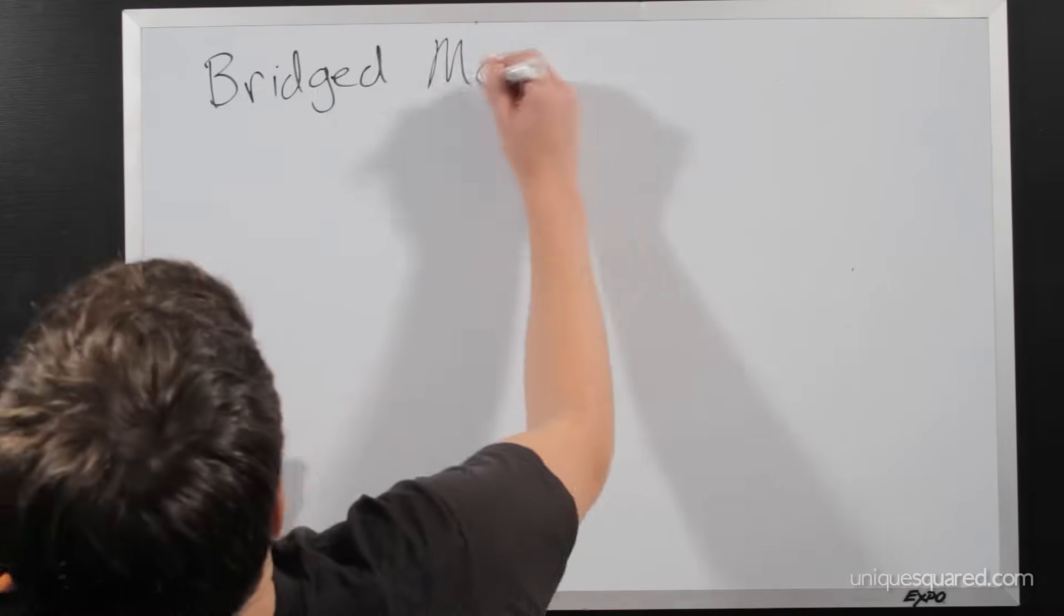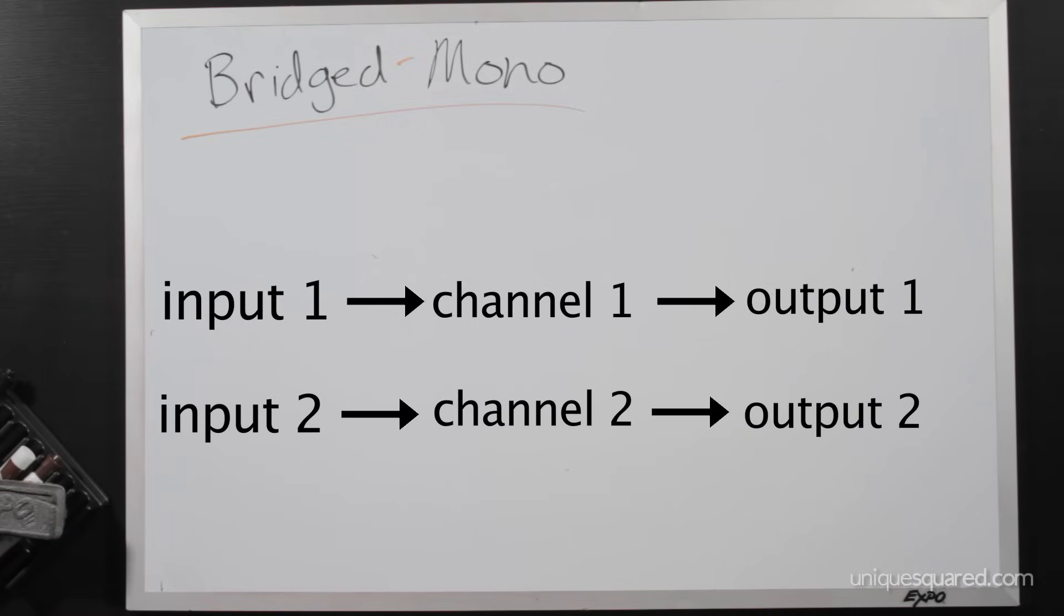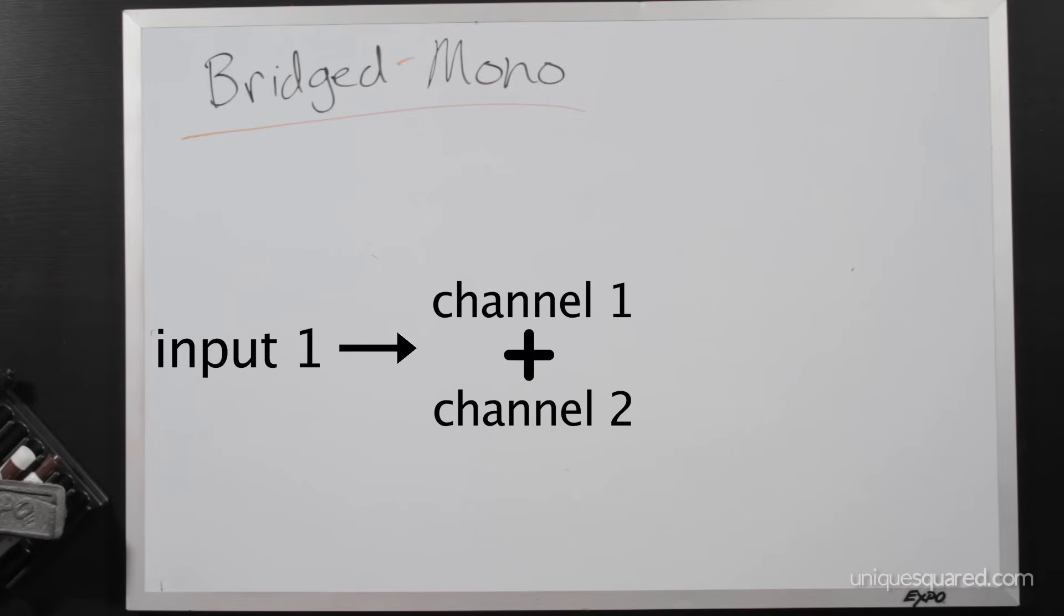Now a lot of amps also have an option for bridged mono. What is bridged mono? Well, rather than taking two inputs and sending amplification to the left and right channels like you would in stereo mode, you are getting one input and combining the power of the left and the right channels into one super powerful channel.